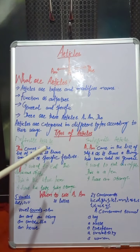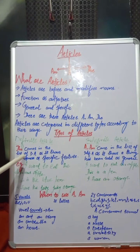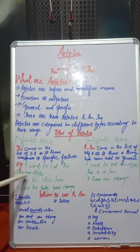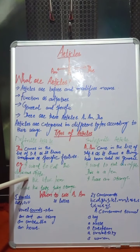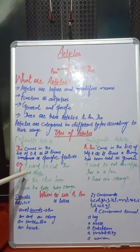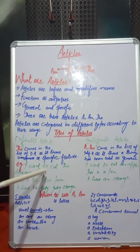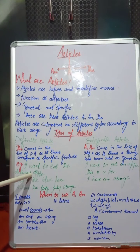To understand it better, let's take an example. For example: 'I want to eat the delicious apple.' Here, 'delicious' shows the uniqueness of the apple. I didn't say 'I eat an apple' — I said 'I eat the delicious apple.' That means the apple has some uniqueness — it is not an ordinary apple, it is a delicious apple.